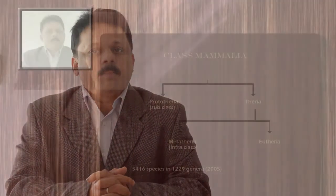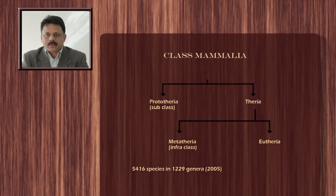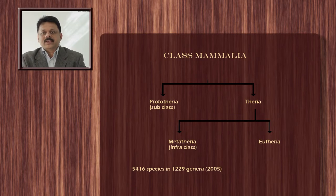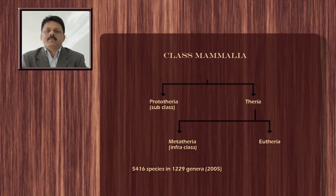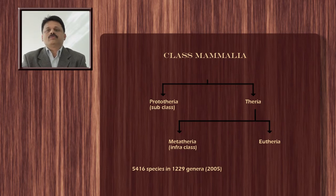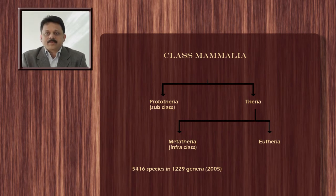Good morning to all of you. Today we will discuss the classification of class Mammalia. Class Mammalia is broadly divided into two subclasses: Prototheria and Theria. The subclass Theria is further divided into two infra-classes: Metatheria and Eutheria. Altogether there are 5,416 species of mammals in 1,229 genera according to the 2005 classification of mammals. We will see each of the subclasses one by one.